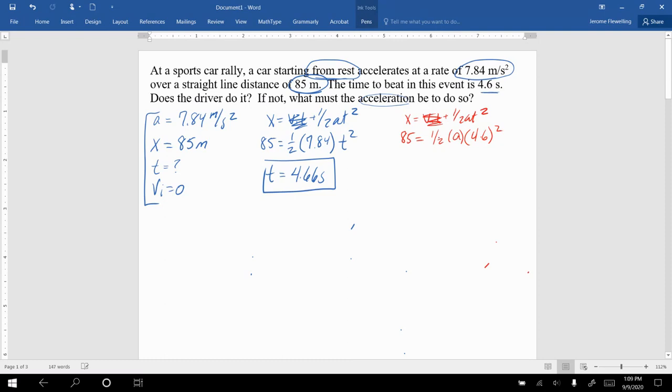So if I multiply both sides by 2 to get rid of the half, divide both sides by the 4.6 squared, then I'm going to get an acceleration of 8.03 meters per second squared. So the racer would have to accelerate faster than that in order to win the event.